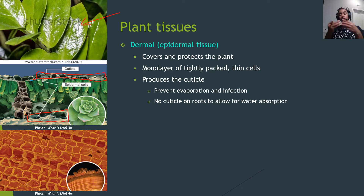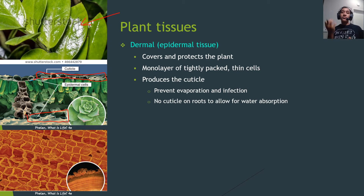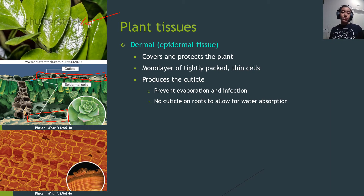There is a cuticle on the leaves and on the stem, but not on the roots — because on the roots you want to absorb water and nutrients. If you covered the roots in a cuticle, you wouldn't be able to do that.